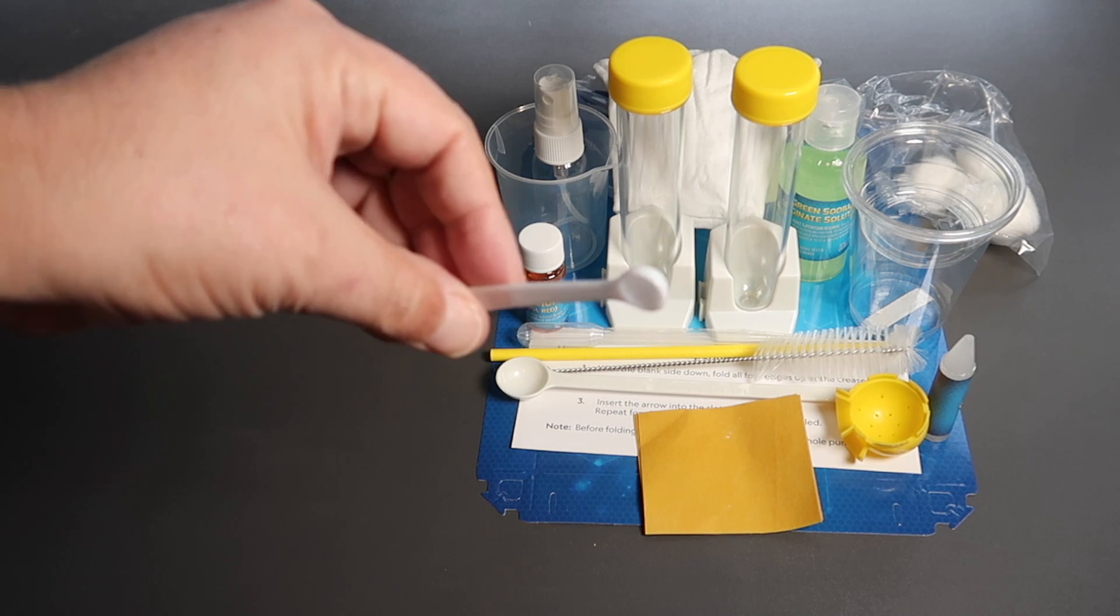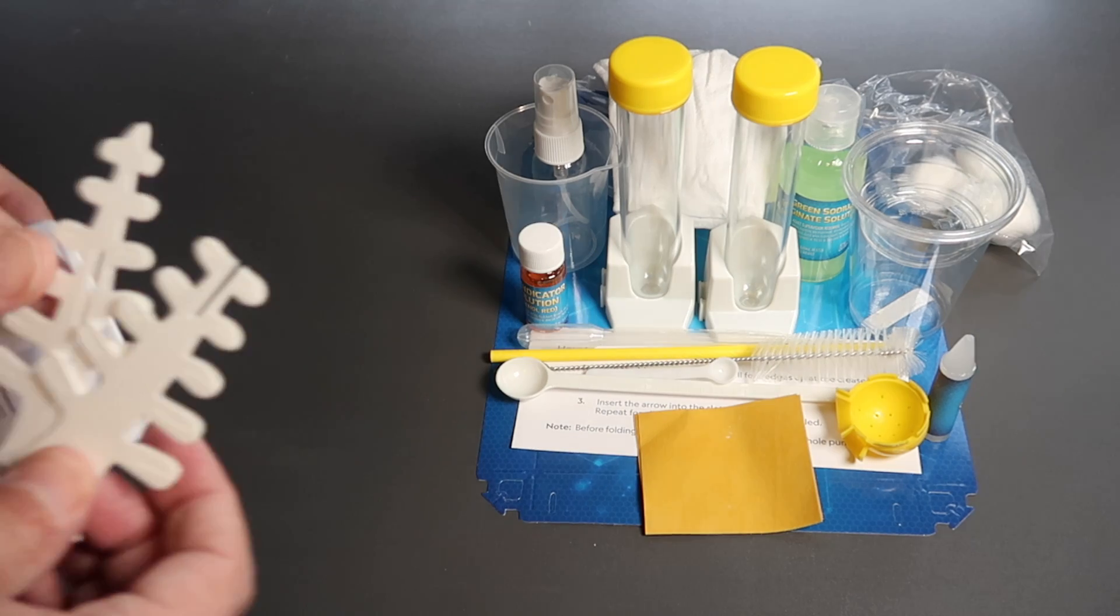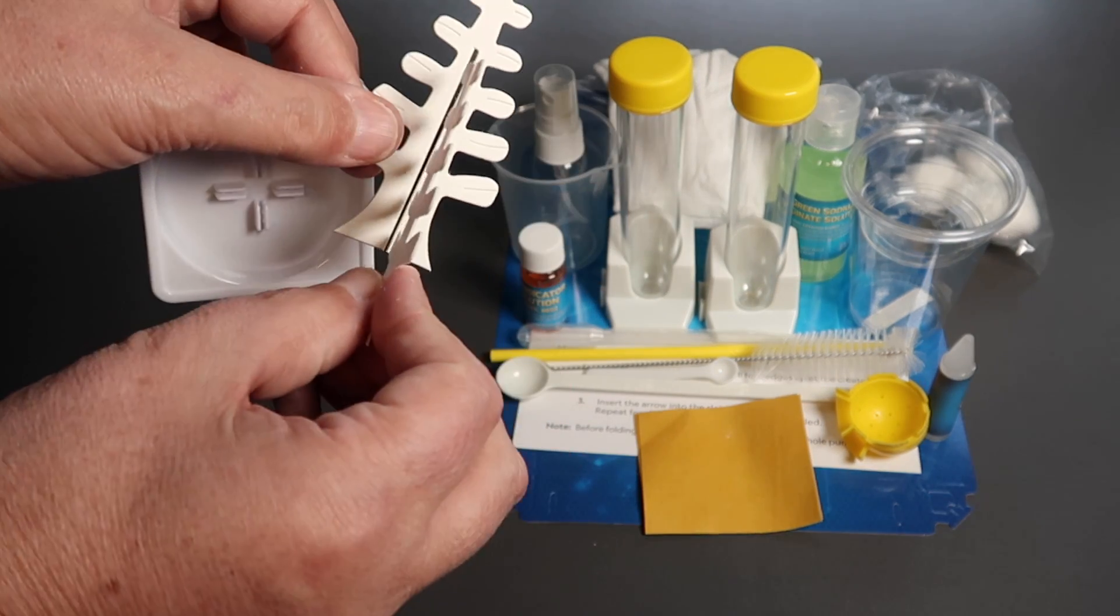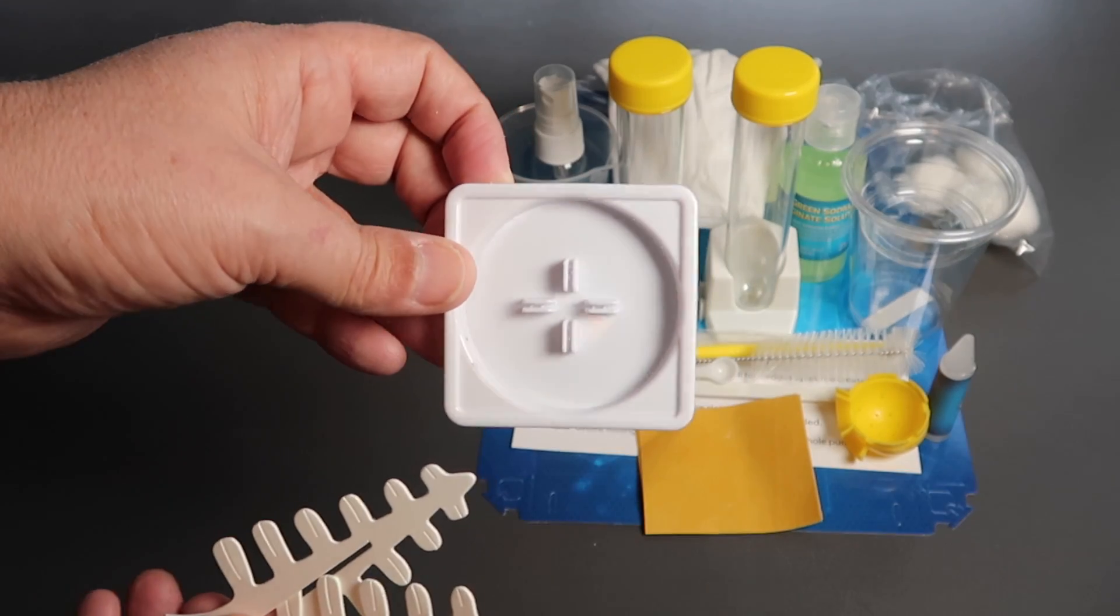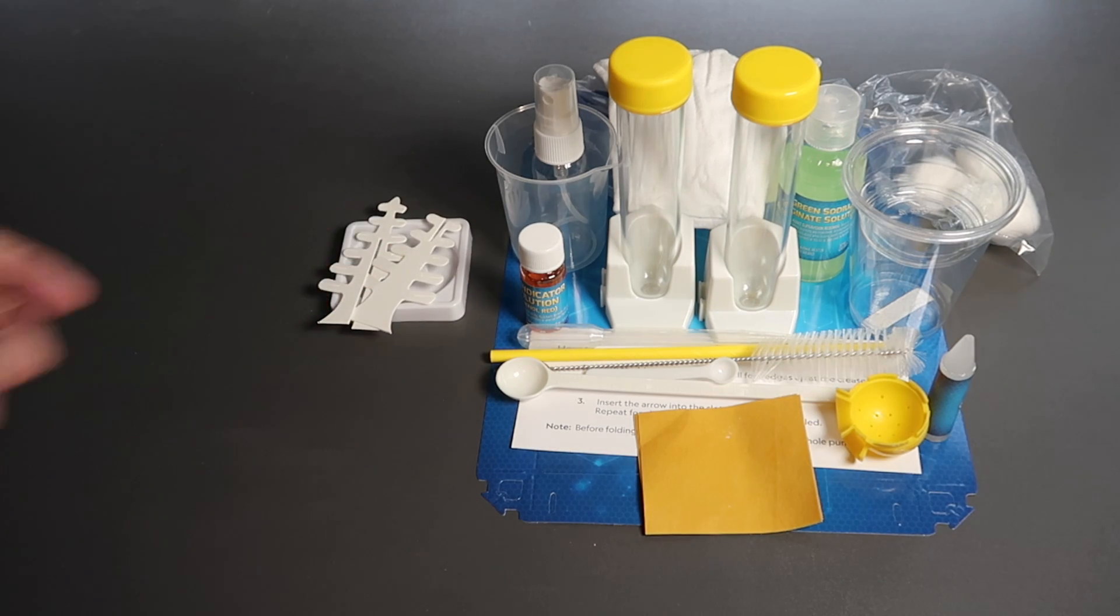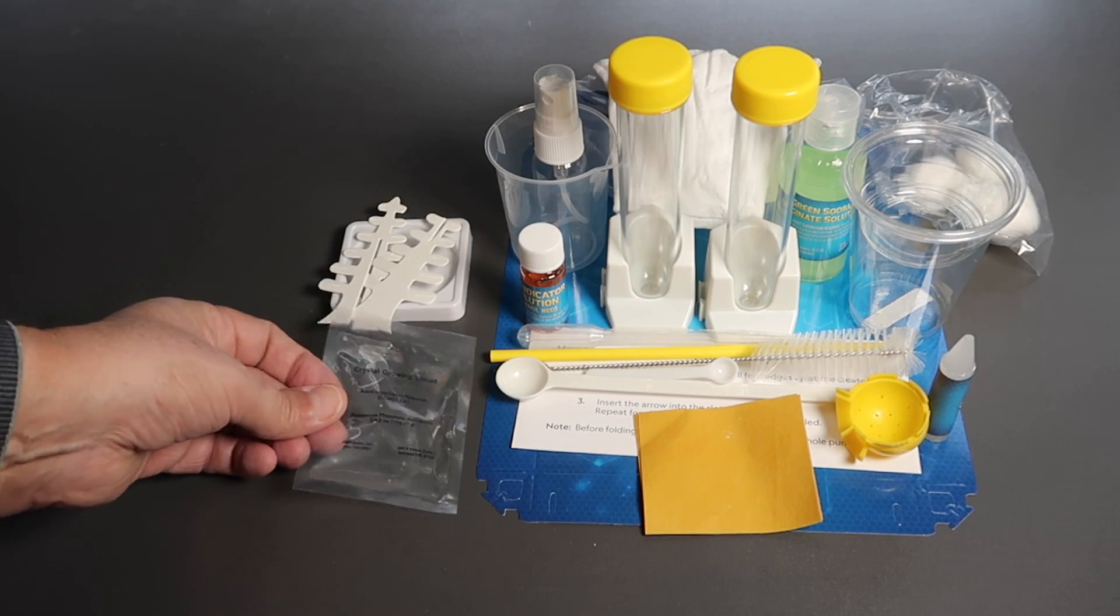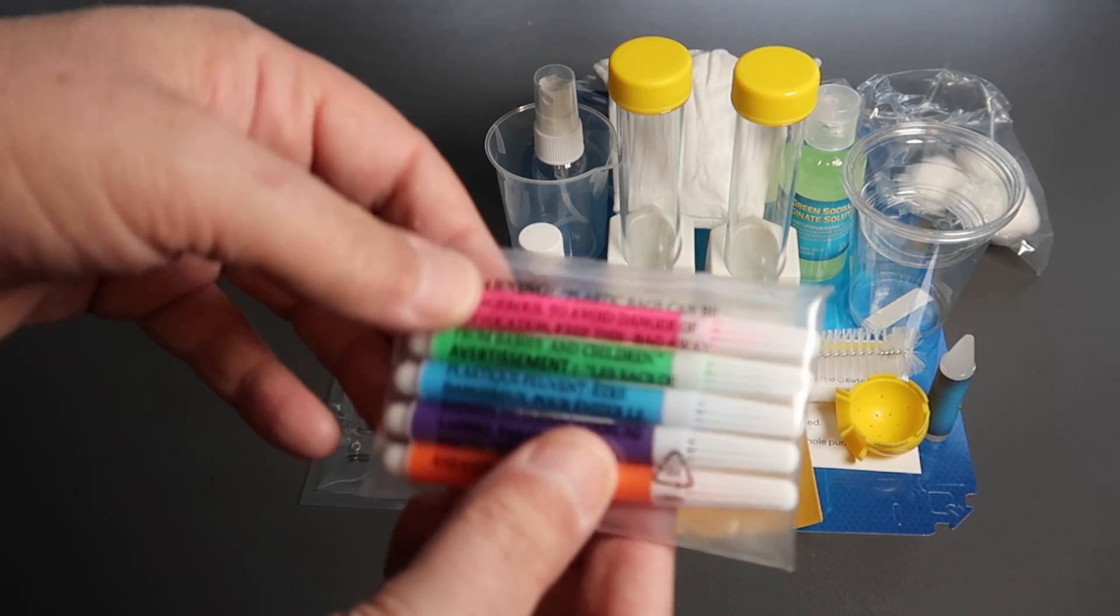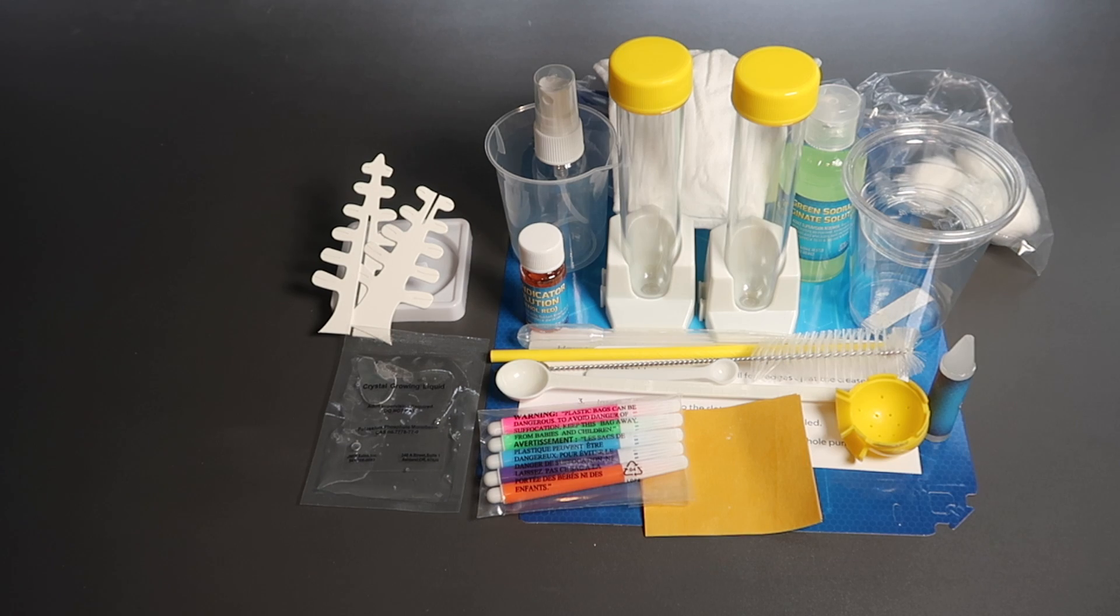Another tiny little measuring spoon, two pieces for making a little tree, and what I imagine is the stand that the tree goes into. Crystal growing liquid, a set of markers of different colors.